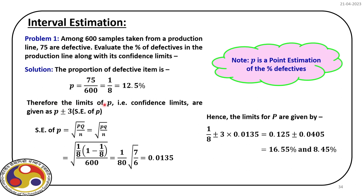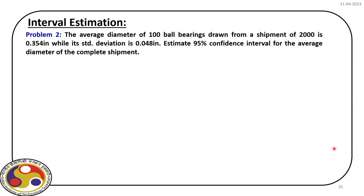Our aim is to find out the confidence limit for p covering the complete population. The confidence limit is defined as p ± 3 times the standard error of p. The standard error of p is the square root of p(1-p)/n. From the given information we can find out this standard error, and the limits come out to be 16.55% to 8.45%. This way we can find out the intervals within which the parameter is expected to lie.